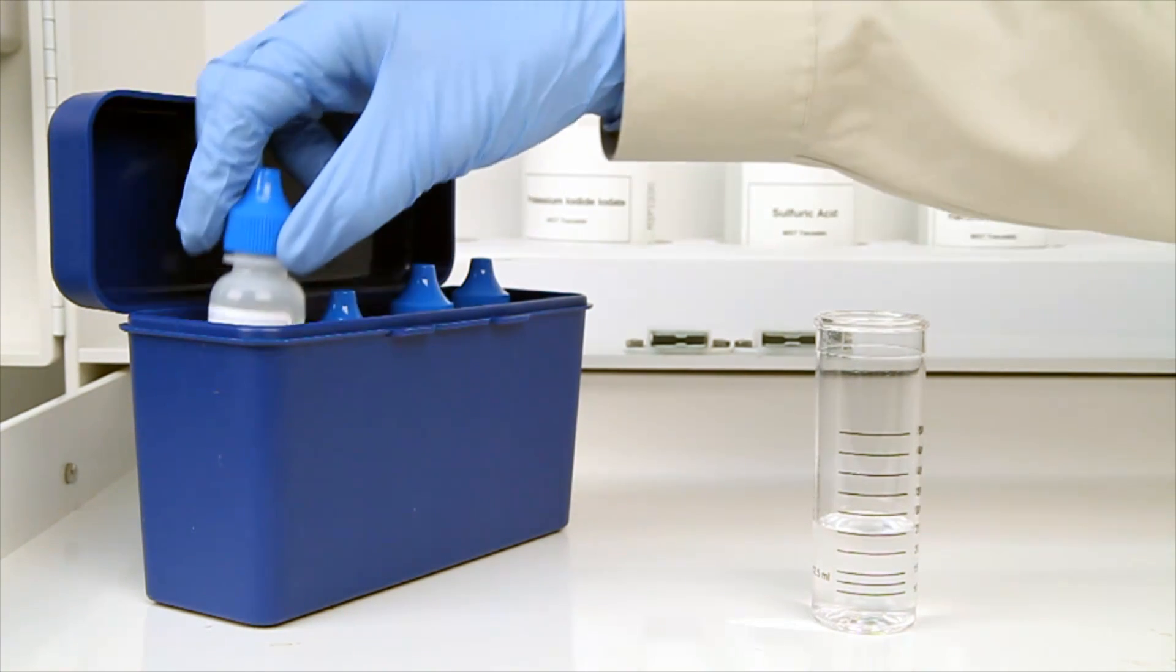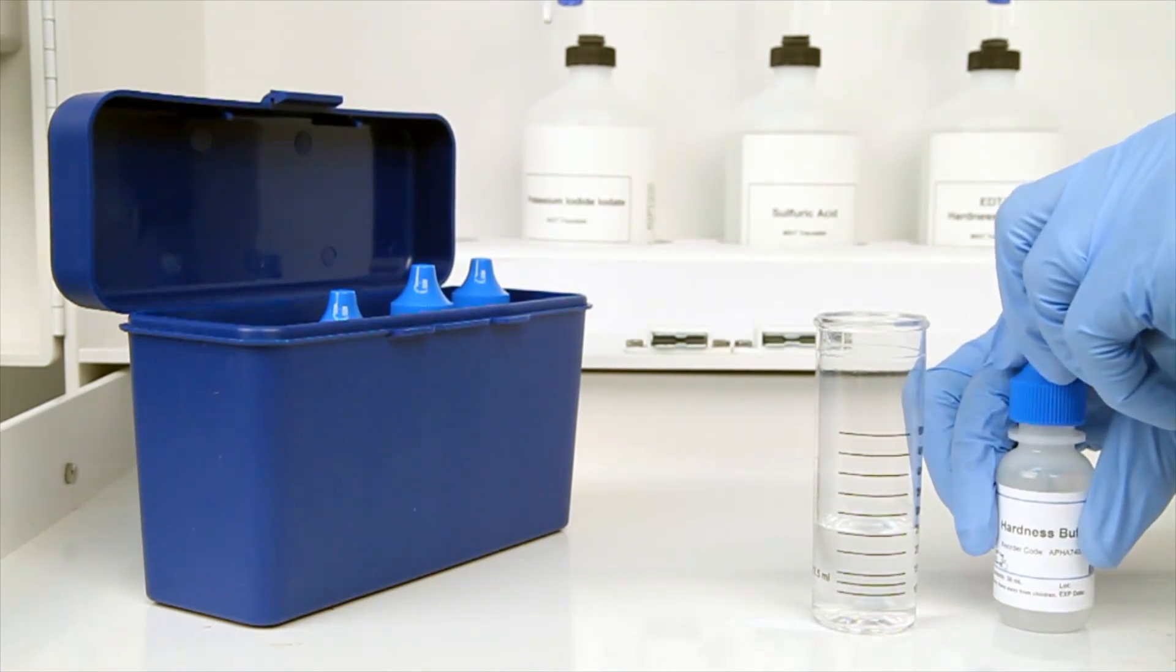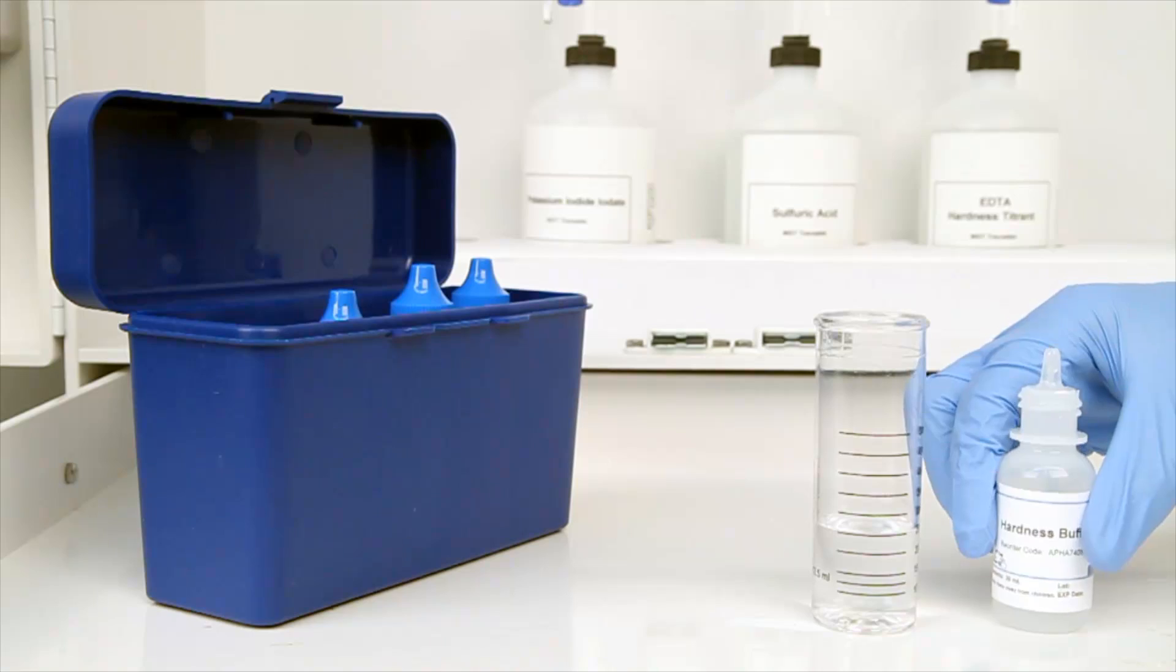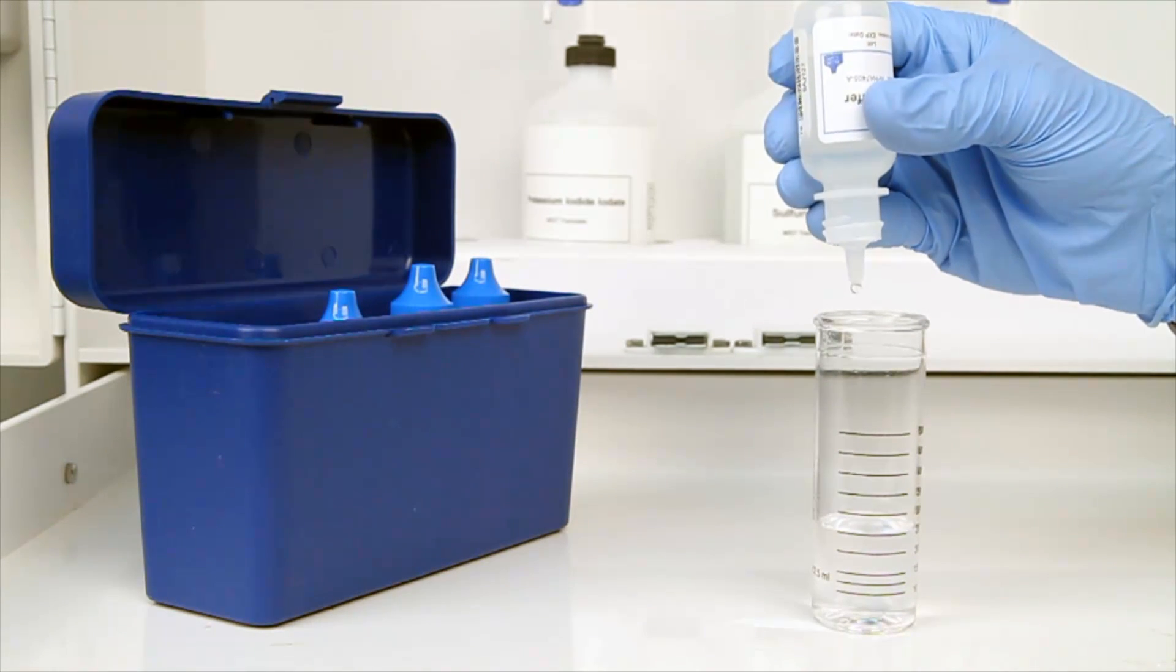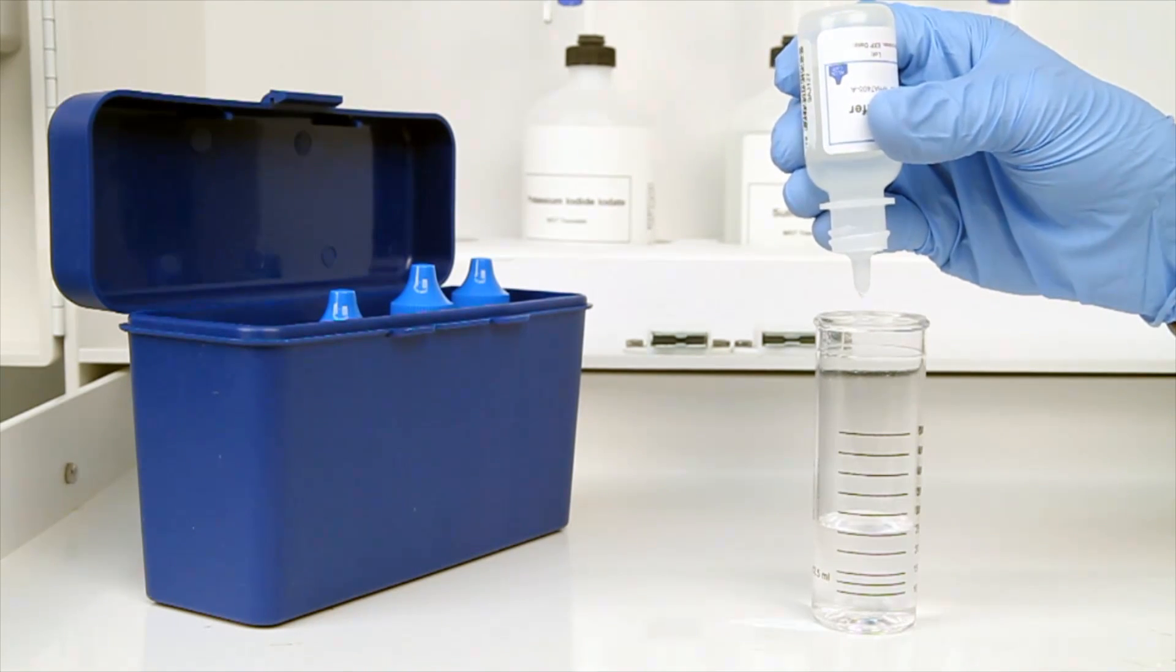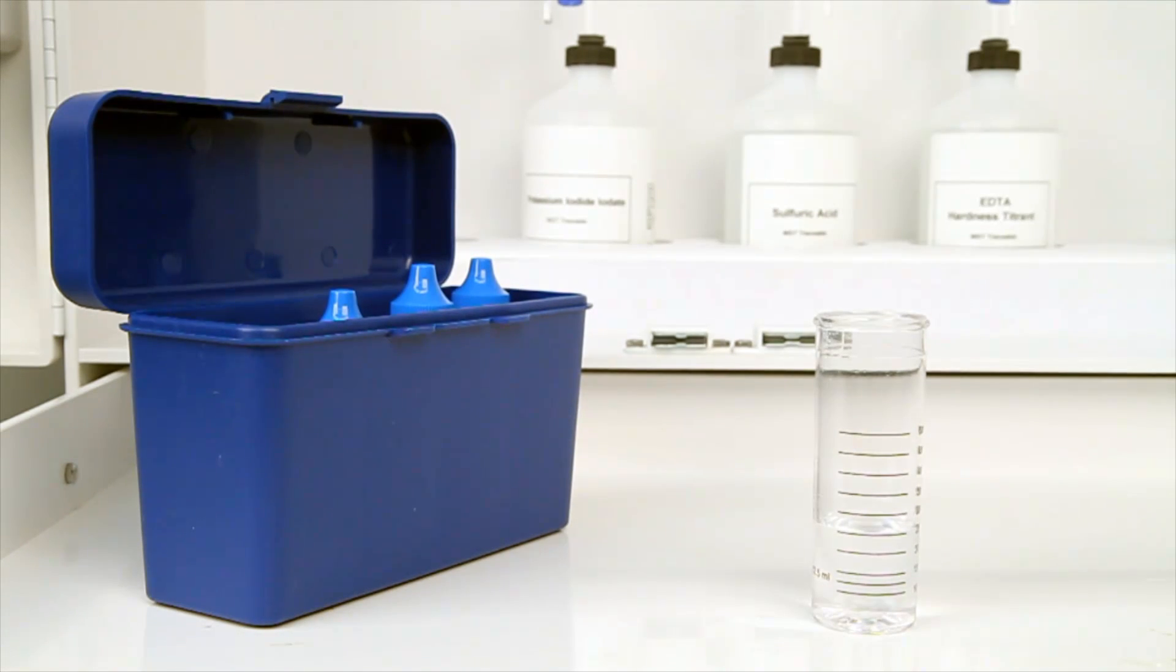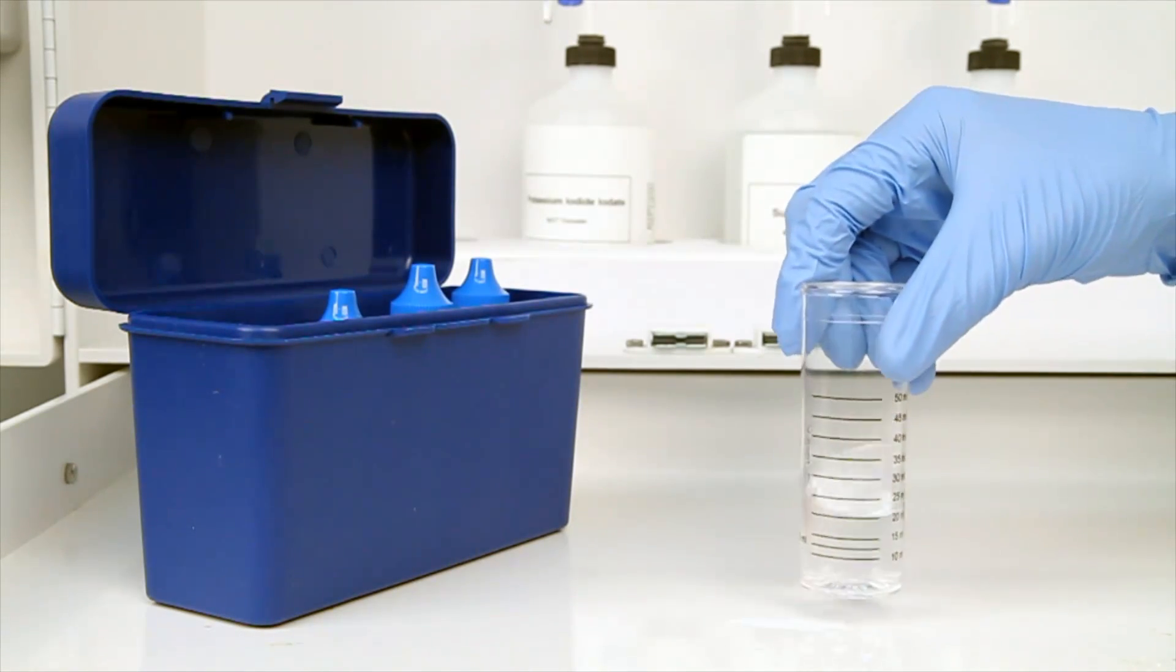The next step according to the Endpoint ID procedure is to add five drops of hardness buffer. Be sure to hold the bottle vertically to get a consistent drop size. Remember to swirl the vial after the addition of each reagent to make sure the reagents are properly mixed.